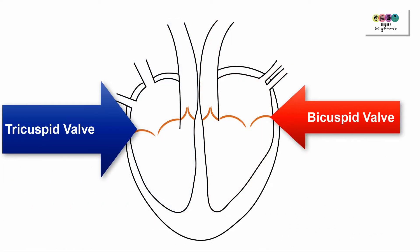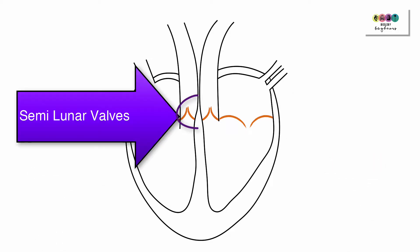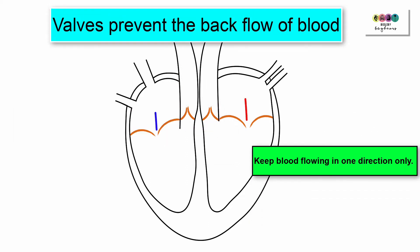The top chambers are separated from the bottom by valves—the bicuspid valve on the left and the tricuspid valve on the right. The bicuspid valve has two flaps and the tricuspid valve has three flaps. There are also two sets of semilunar valves, and each valve has three flaps or cusps. The heart valves are really important because they prevent the backflow of blood. They keep the blood flowing in one direction only.